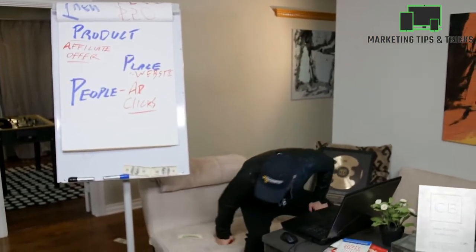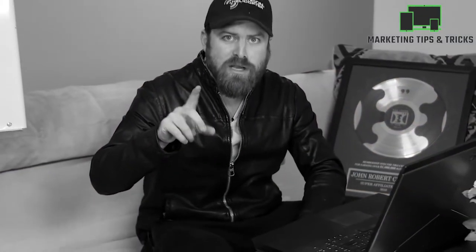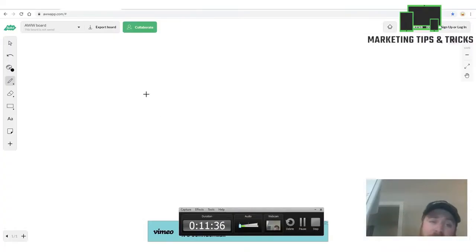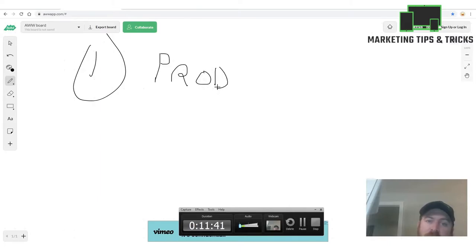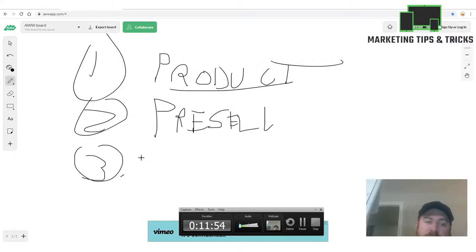Let's go into how we actually put this into a process right here on my computer. The way we're going to implement this: first we set up the product and get our affiliate link, then we set up our website — our pre-sell page — and third we set up our Google ad.